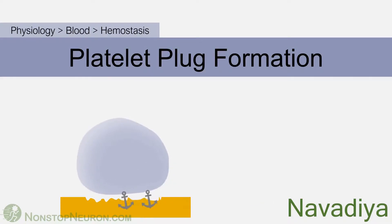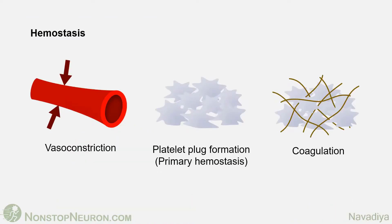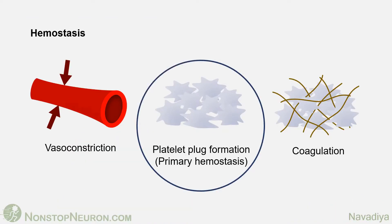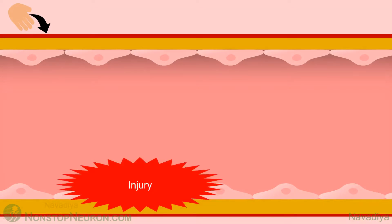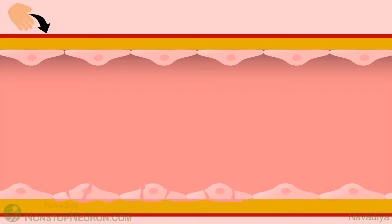Let's get started with the first video of platelet plug formation. We know that platelet plug formation is one of the mechanisms of hemostasis along with vasoconstriction and blood coagulation. Let's say this is a blood vessel in your hand. This is its endothelium and this is collagen underneath it. Under physiological conditions, platelet plug formation is prevented by endothelial cells. But unfortunately you injured your hand, which damaged the endothelial cells and exposed the collagen underneath, triggering platelet plug formation.